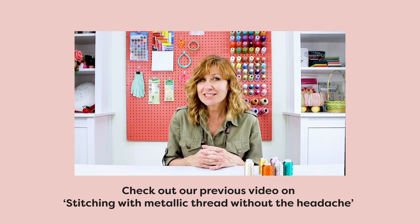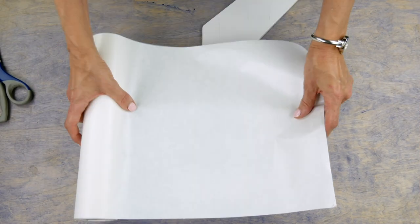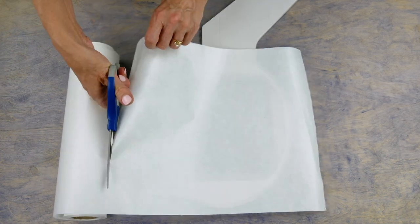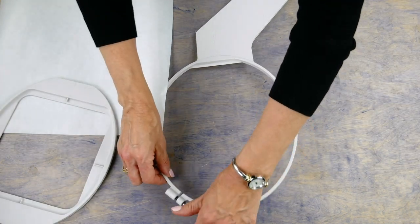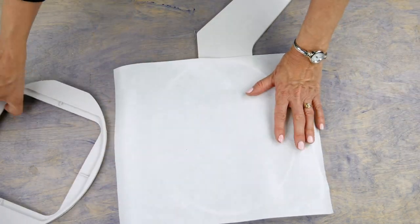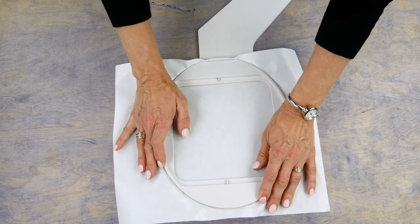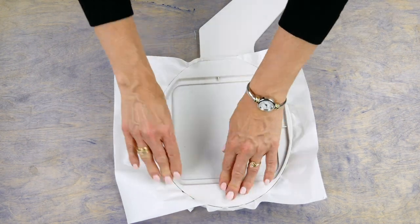To begin, I will hoop this sticky stabilizer, paper side up, in my hoop. Mark the center so you can easily place your tie on the right spot.